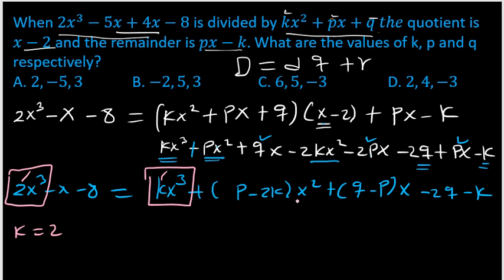Again, the coefficient of x² here is p minus 2k, and the coefficient of x² there is 0x² because there's no x² term. So p minus 2k equals 0. But I know the k value which is 2, so p minus 4 equals 0. So p value equals 4.